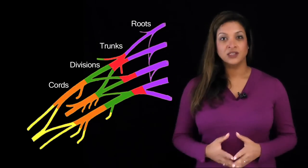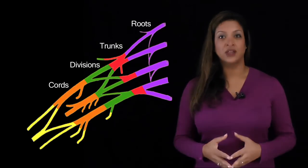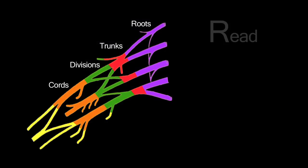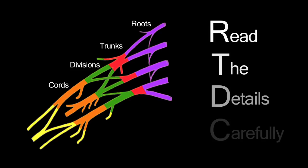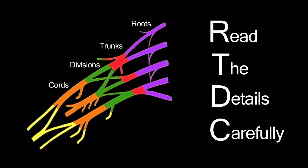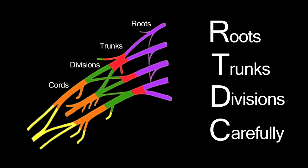This can be confusing, so I have a mnemonic: 'Read the details carefully.' R is for roots, T is for trunks, D for divisions, and C is for cords.